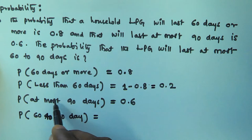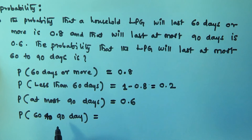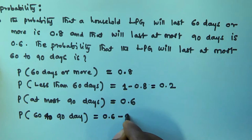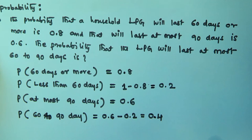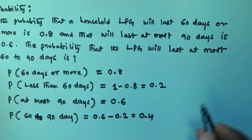Because the first value covers less than 60 days and the second covers at most 90 days, the probability that the LPG will last from 60 to 90 days is given by 0.6 minus 0.2, which equals 0.4. Now I will explain this problem graphically.